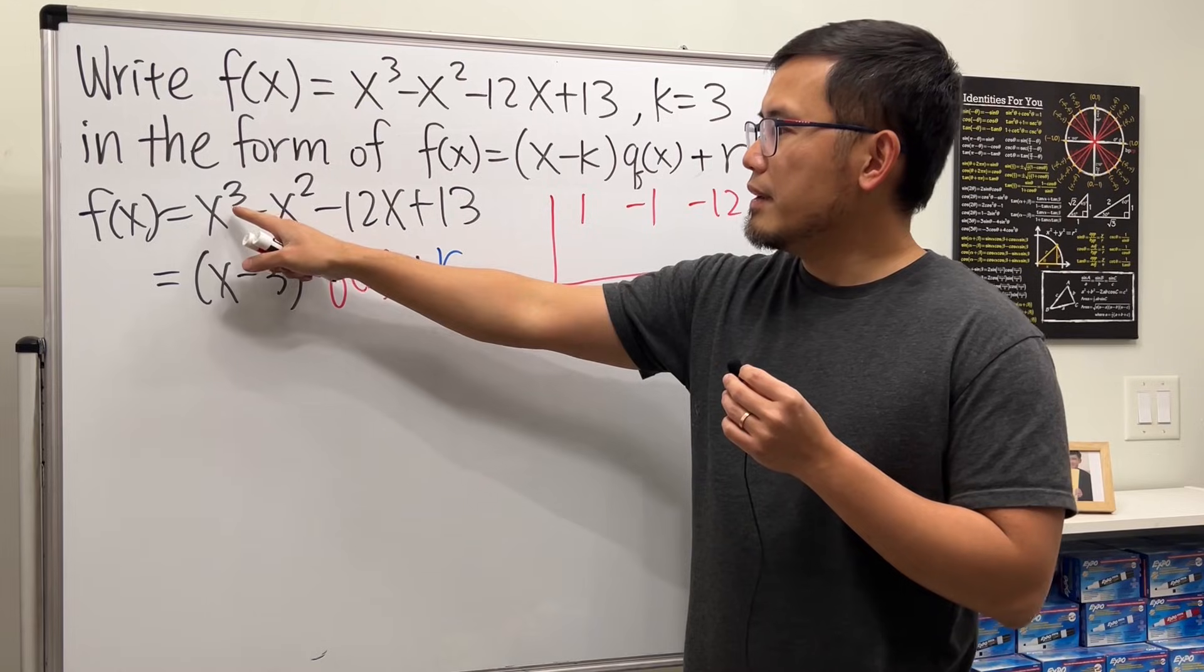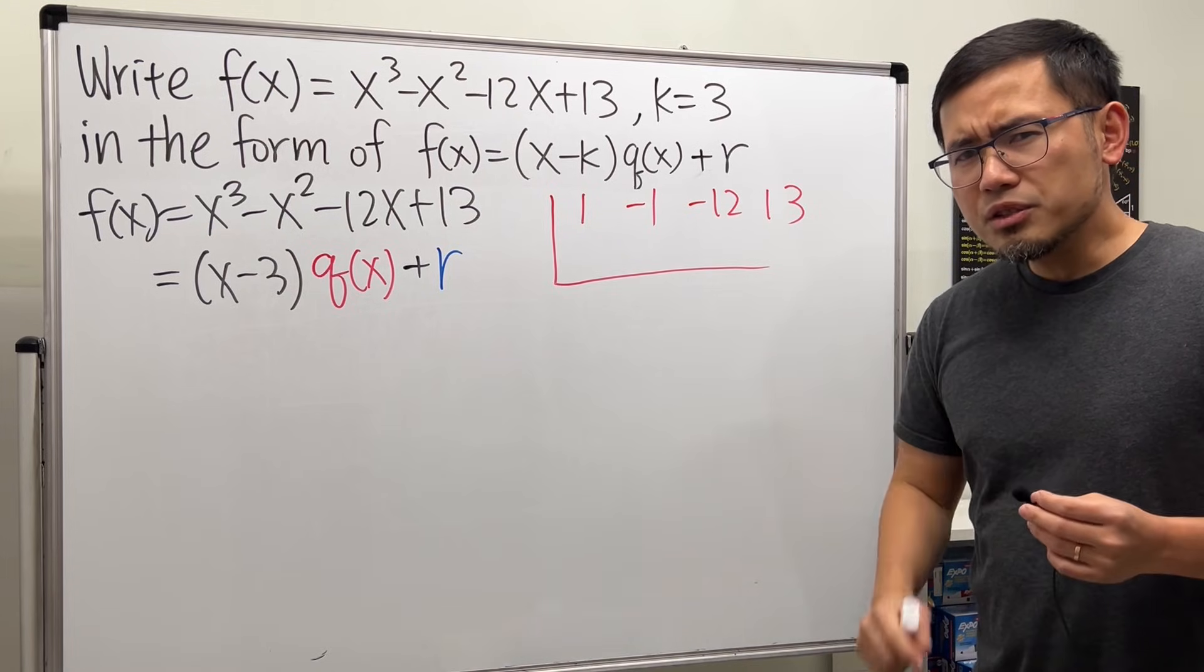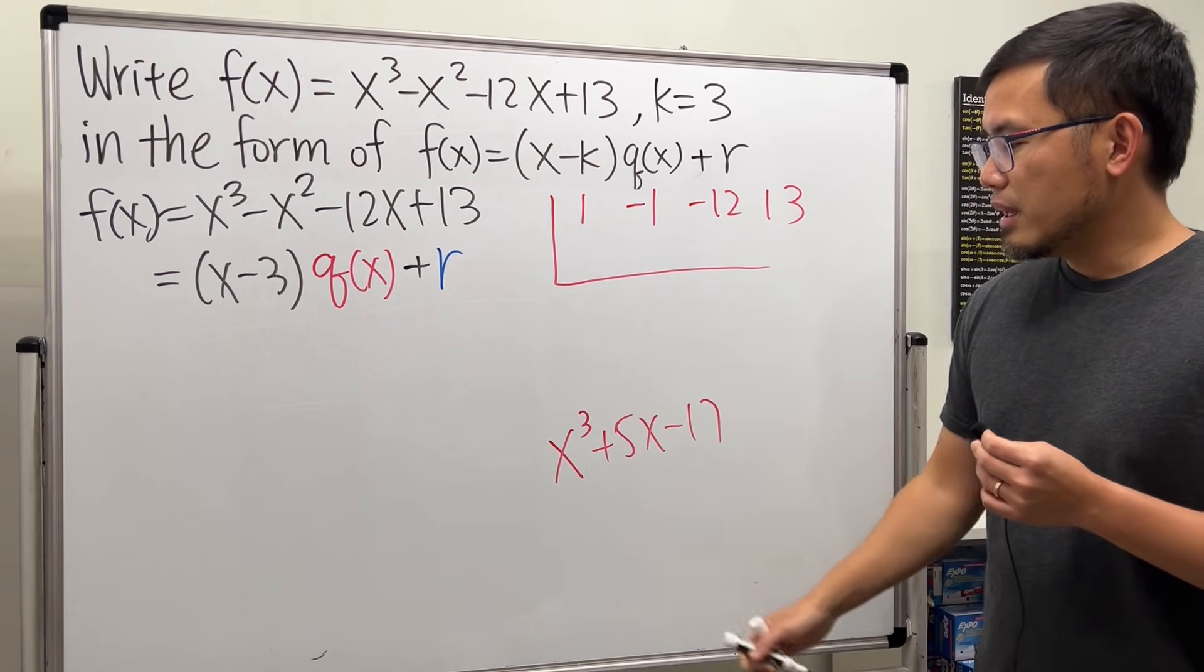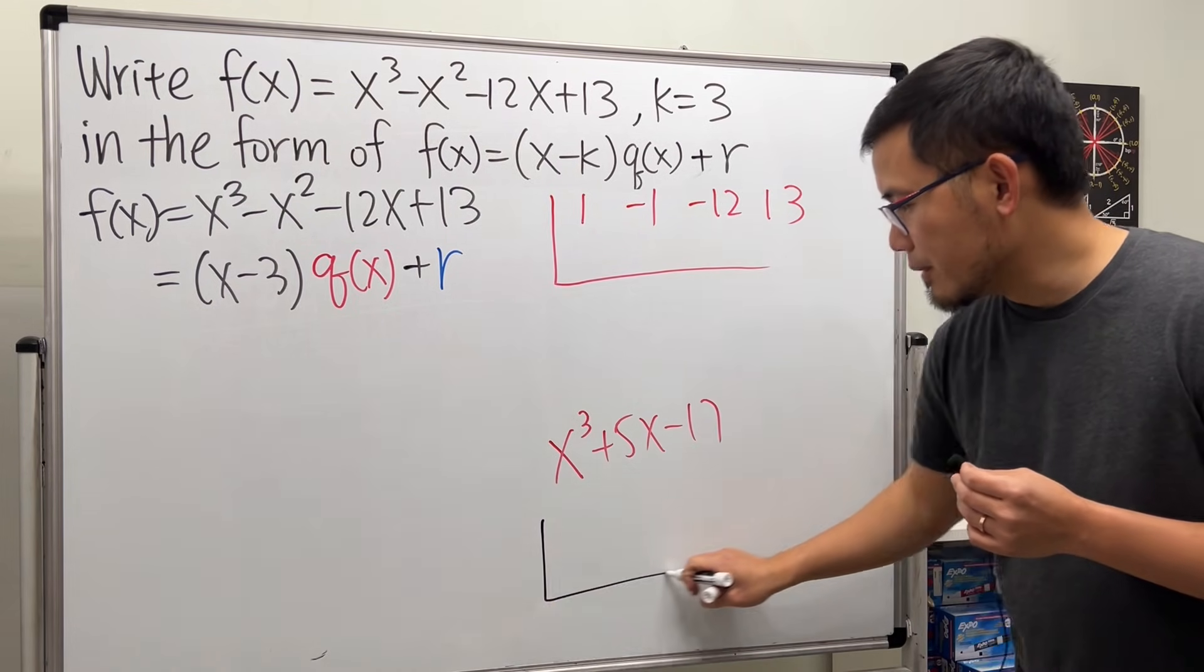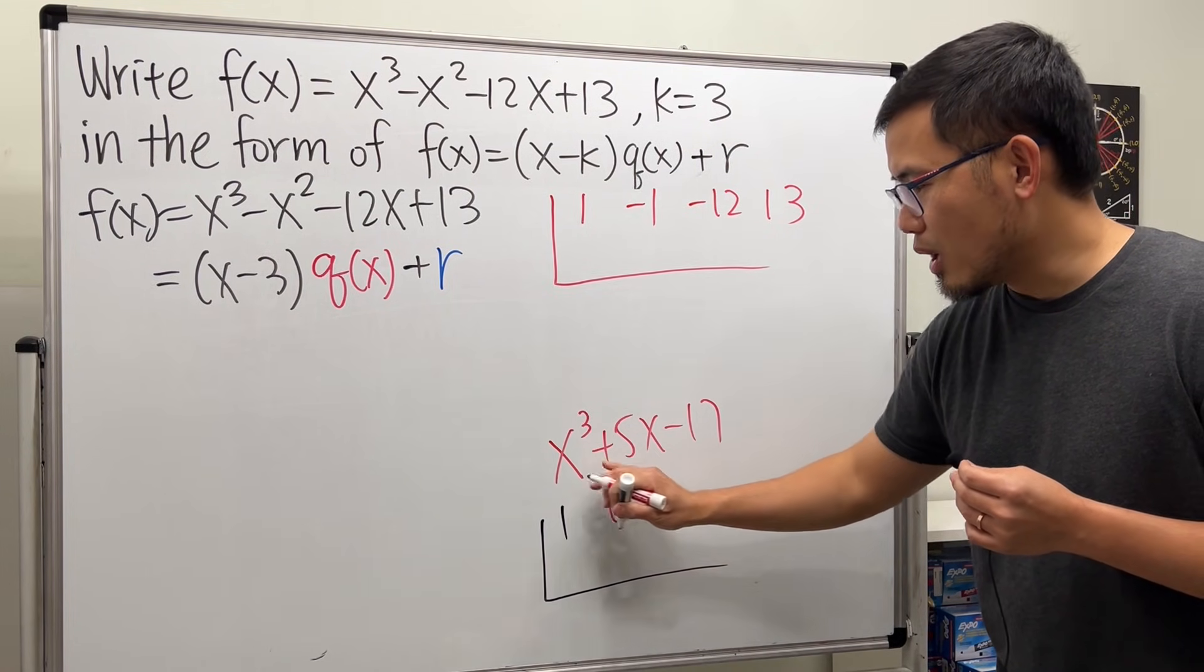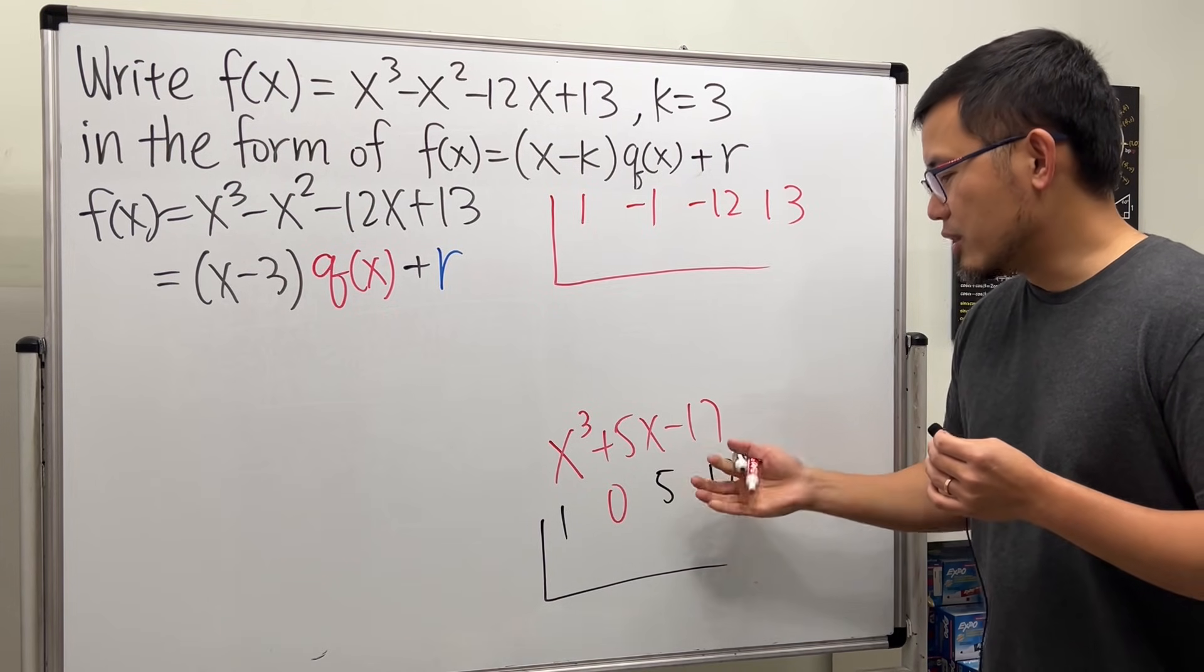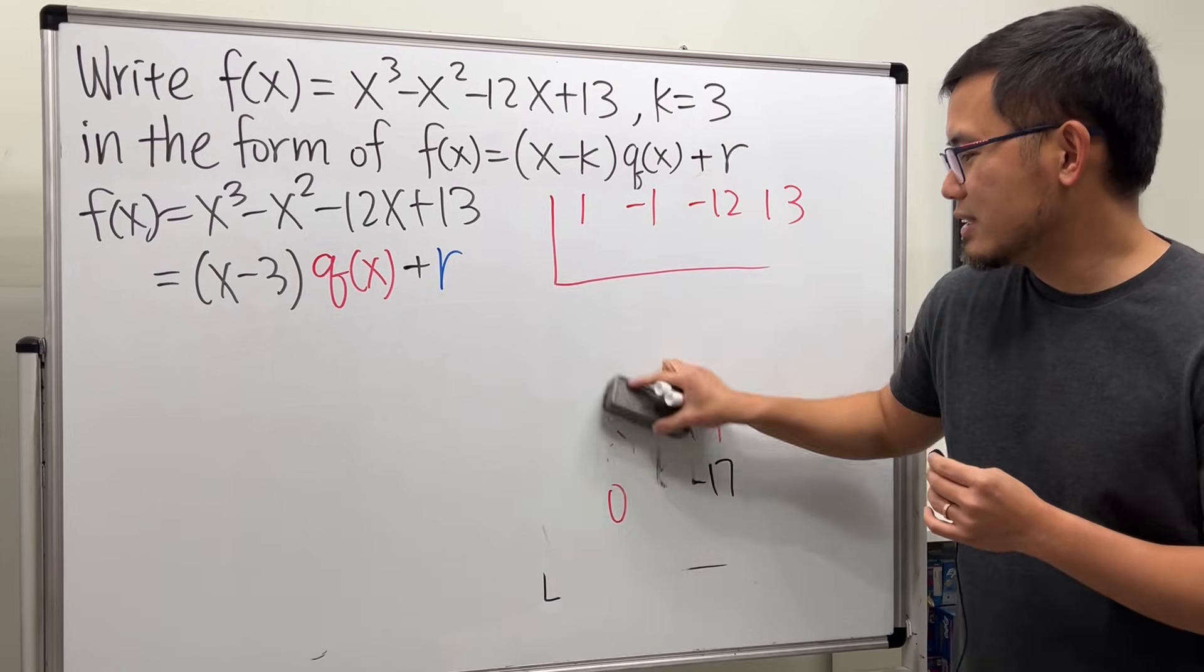Keep in mind, though, we have x to the third power, x squared, x to the first, and no x in that order. Sometimes you may get like a tricky question. If the question is like this, x to the third power plus 5x minus 17, you see there's no x squared, right? In this case, when you want to set up, you do the following. We have 1x to the third power, but 0x squared. You have to put a 0 as a placeholder. And then continue with the 5x to the first, and then the constant term, negative 17, right? So pay attention to this, but we are not dealing with that here, so all good.